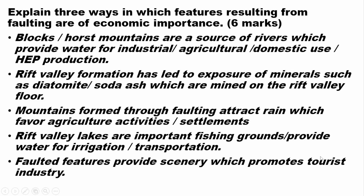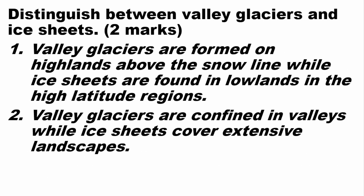Distinguish between valley glaciers and ice sheets. Valley glaciers are formed on the highlands above the snow line, while ice sheets are found in lowlands in the polar regions. Another difference is that valley glaciers are confined in valleys, while ice sheets cover extensive landscapes.